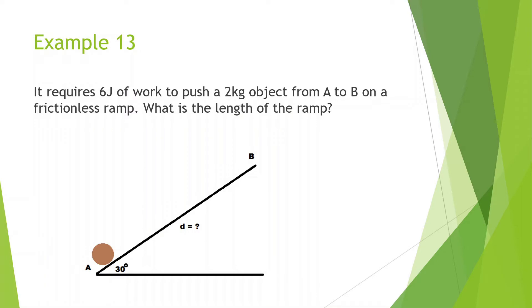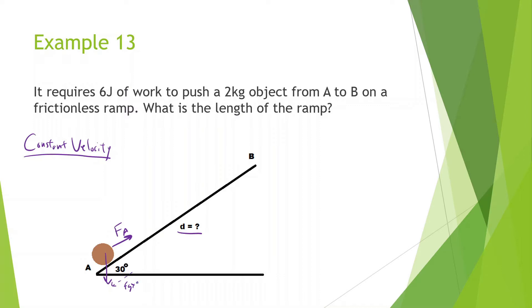It requires 6 joules of work to push a 2 kg object from point A to B on a frictionless ramp. What is the length of the ramp? We're looking for what this distance is. We're going to assume we're pushing this up with constant velocity — when it doesn't state that, you just assume it. We're also going to assume we're pushing this up the hill.